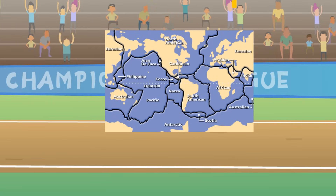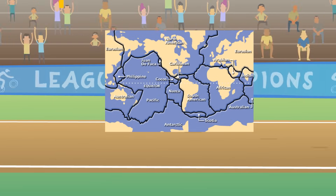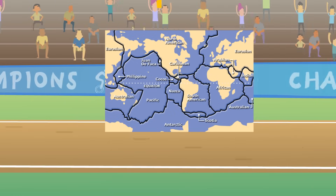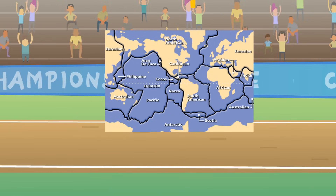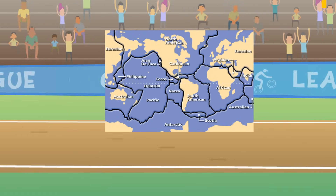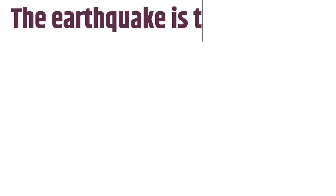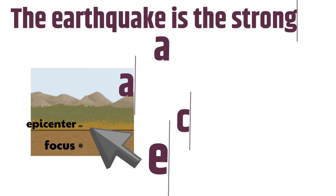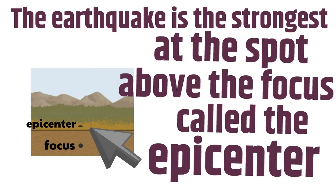But if they move too fast, that can cause an earthquake. An earthquake changes the earth's surface and can damage roads, bridges, and buildings, and even crack up the earth. And remember, the earthquake is the strongest at the spot above the focus, called the epicenter. You don't want to be anywhere near the epicenter if an earthquake was to happen.